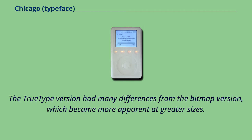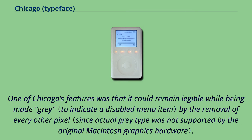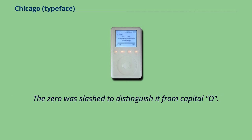The TrueType version had many differences from the bitmap version, which became more apparent at greater sizes. One of Chicago's features was that it could remain legible while being made gray by the removal of every other pixel. The zero was slashed to distinguish it from capital O.